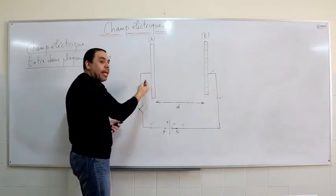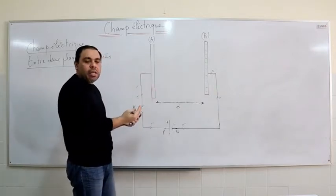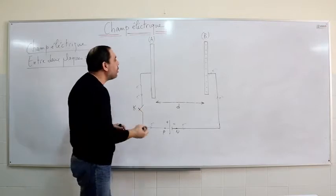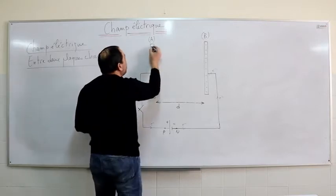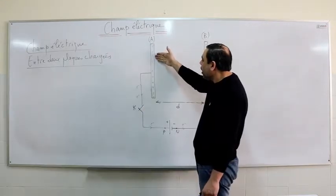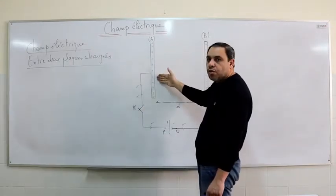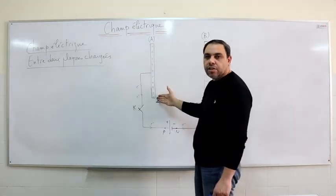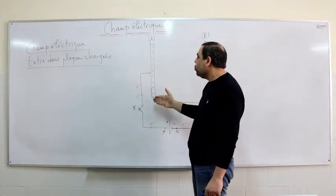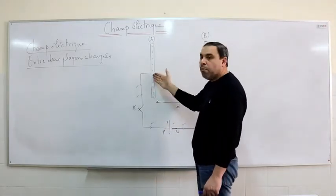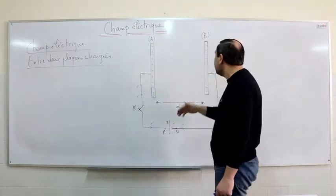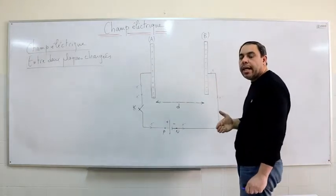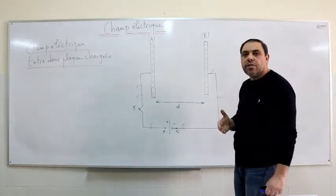Plate A is initially neutral. Upon losing its electrons, it becomes positively charged. There is a uniform distribution of positive charges on A. On B, there is a uniform distribution of negative charges.